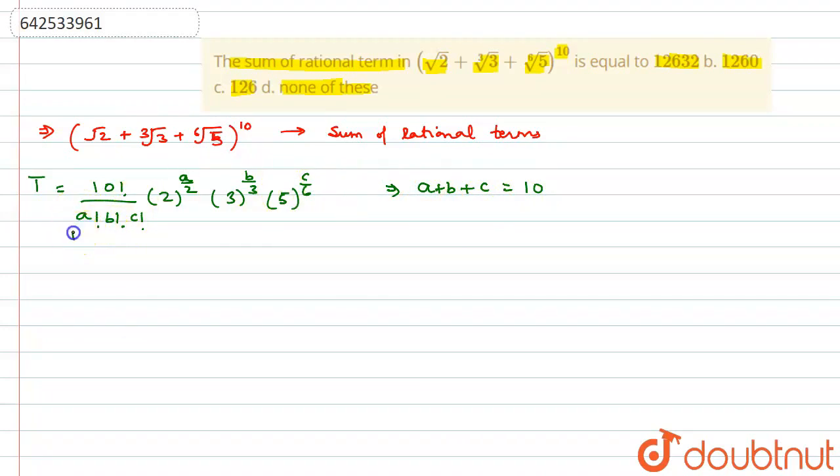If we want to make this complete term rational, what is the condition? This is already rational. So we have to make the powers rational. Once the powers are rational, the complete term will automatically be rational. So powers which is a by 2, b by 3, and c by 6, we have to make these rational.